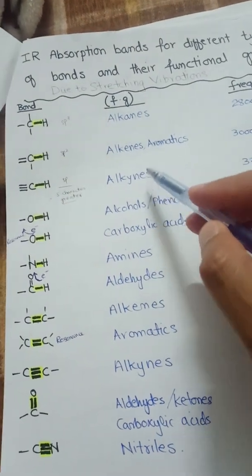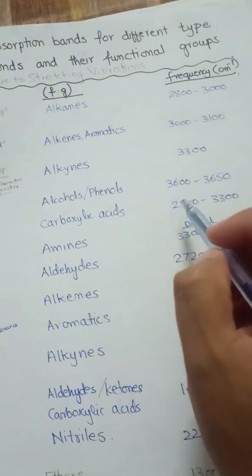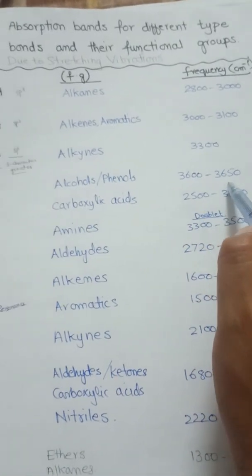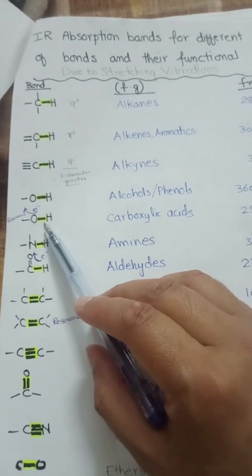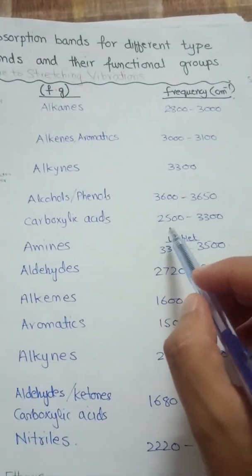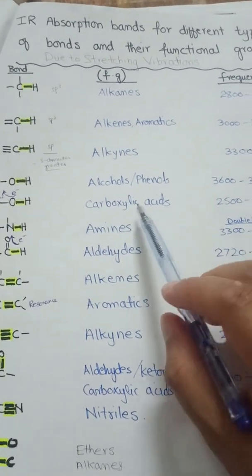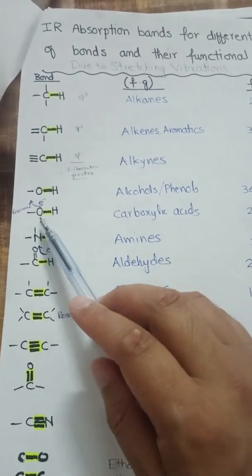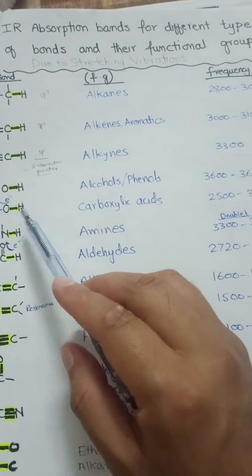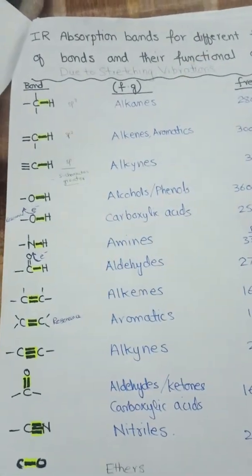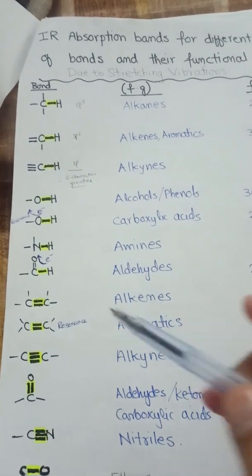For O-H stretching in alcohols and phenols, the absorption frequency is 3600 to 3650 per centimeter. In carboxylic acids, the O-H stretching frequency decreases to 2500 to 3300 per centimeter. This decrease occurs because the carbonyl group weakens the O-H bond due to the acidic nature of the carbonyl and the electron-withdrawing inductive and resonance effects of the carbonyl group.